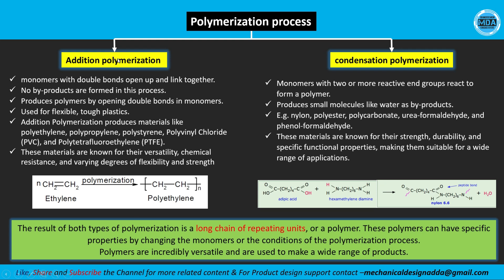In addition polymerization, we use monomers and through the process we get a polymer. For example, we use ethylene and we get polyethylene. In condensation polymerization, we can use different types of monomers — for example, adipic acid and hexamethylene diamine — and we get nylon. One key difference: in addition polymerization there is no byproduct, whereas in condensation polymerization we get water as a byproduct.